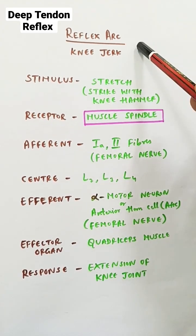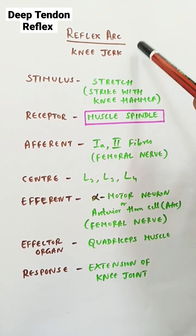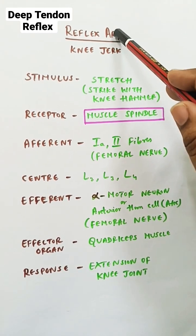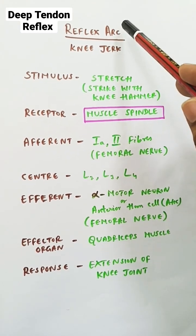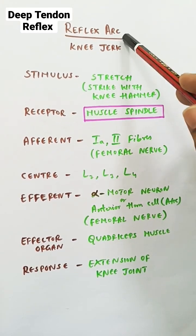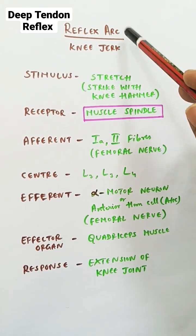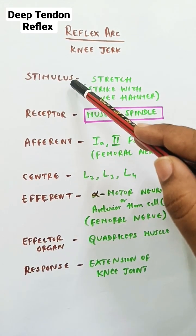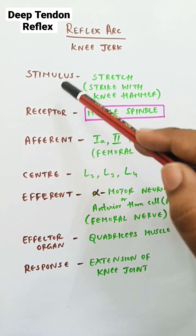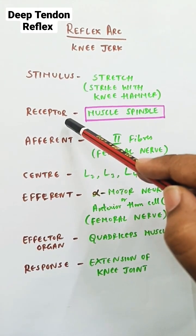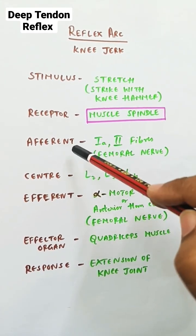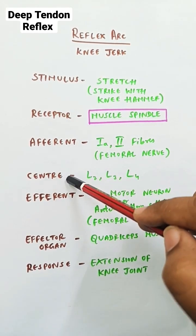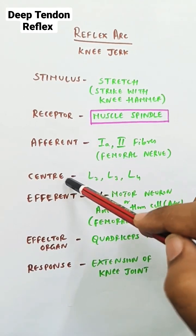A reflex is an involuntary response to a sudden stimulus. To get a proper reflex, we should have a normally working reflex arc — the stimulus given should be detected by the receptor, and afferent nerves will carry the impulses from the receptor to the center.